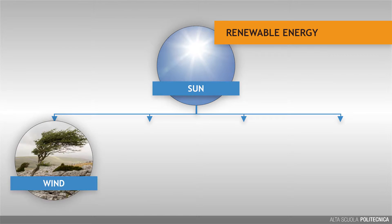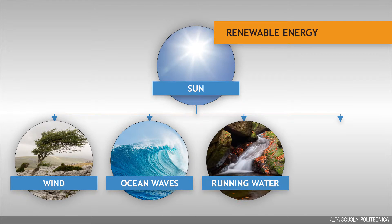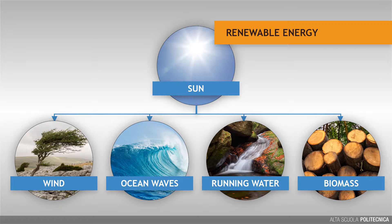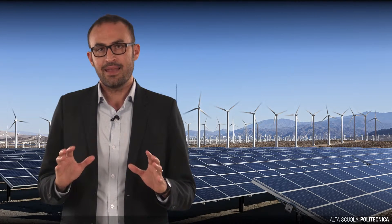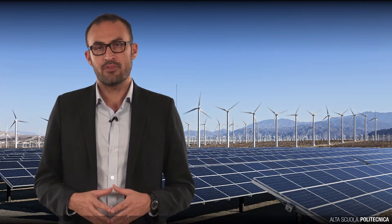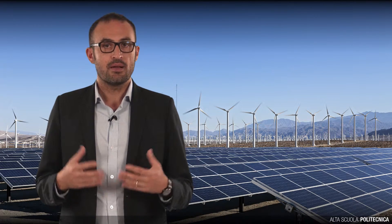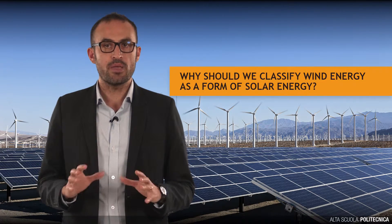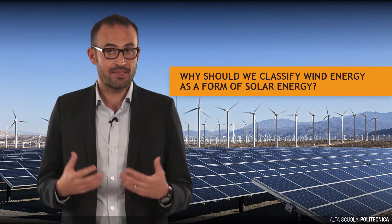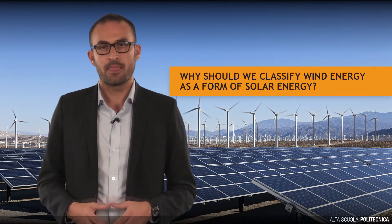Energy from wind, ocean waves, currents and thermal gradients, waterfalls, running water and biomass are all forms of solar energy harvested from the great planetary cycles. Let's understand, for instance, why we should classify wind energy as a form of solar energy.